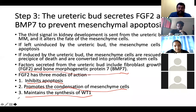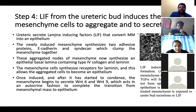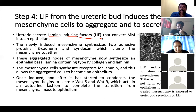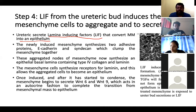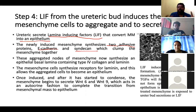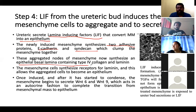WT1 makes the mesenchymal cells develop into nephrons. That is the third step. The fourth step involves another set of factors called lamina-inducing factors, or LIF. LIF consists of several combined proteins that make the mesenchymal cells convert into epithelium. The mesenchymal cells are loose cells — a kind of mass — whereas epithelium is a laminar structure. For this conversion, two proteins are produced: E-cadherin and syndecan.